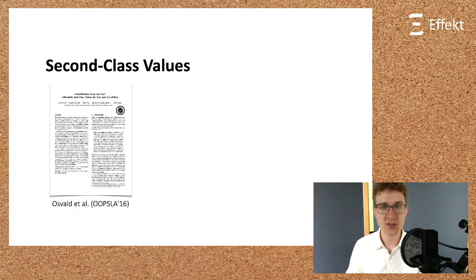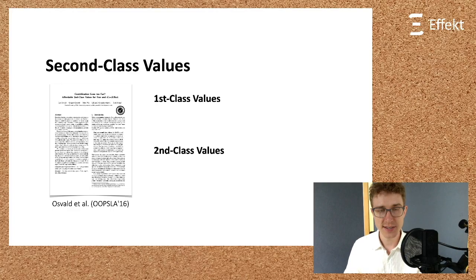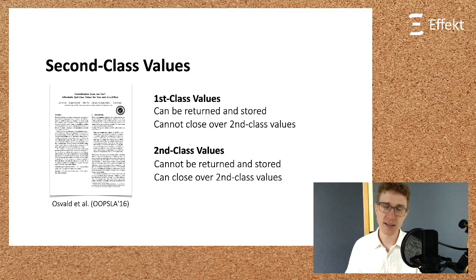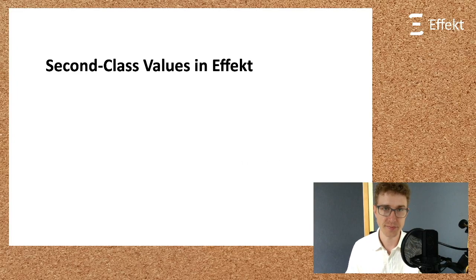Osvald et al. introduced a type system that distinguishes between first-class values and second-class values. First-class values can be returned and stored but cannot close over second-class values. In contrast, second-class values cannot be returned or stored but in turn can close over other second-class values. In Effekt, we make a similar distinction.